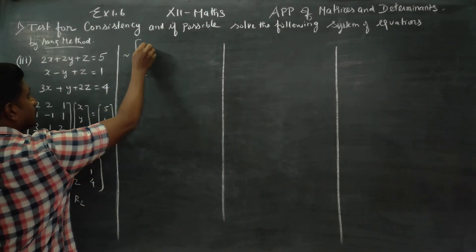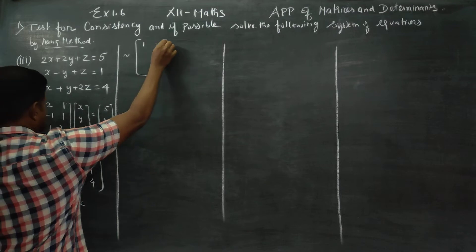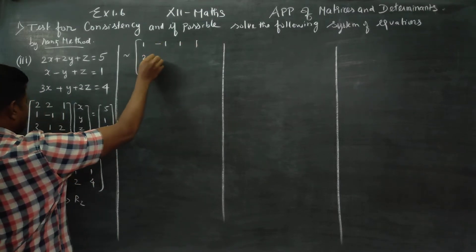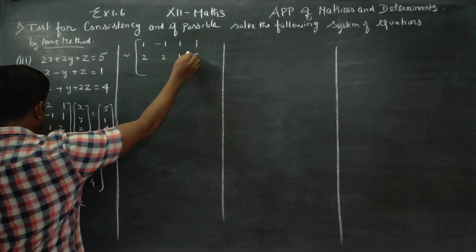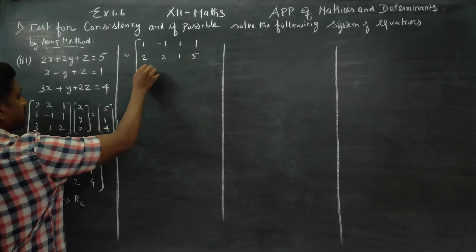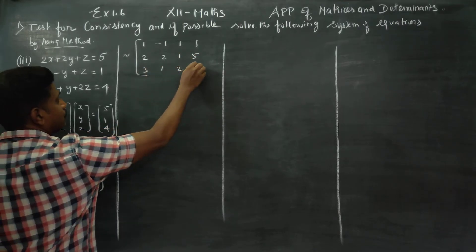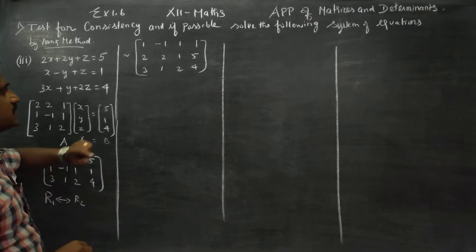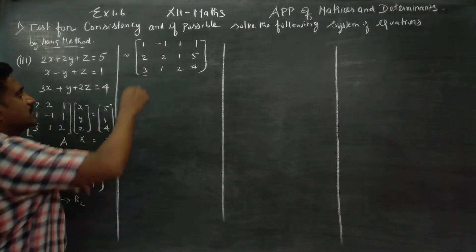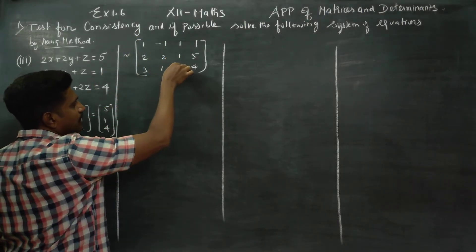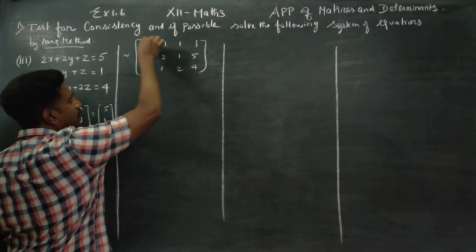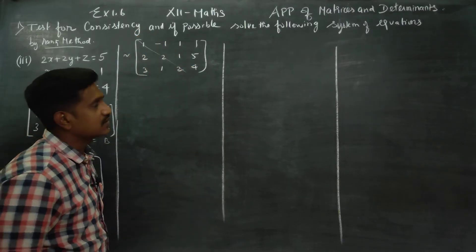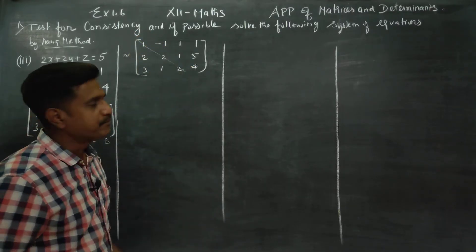After interchanging R1 and R2, I will be getting: row 1 as 1, minus 1, 1, 1; then row 2 as 2, 2, 1, 5; then row 3 as 3, 1, 2, 4. The elements a11, a22, a33 form the principal diagonal.